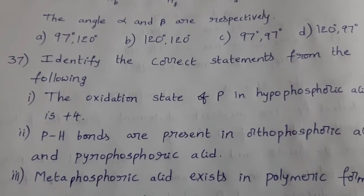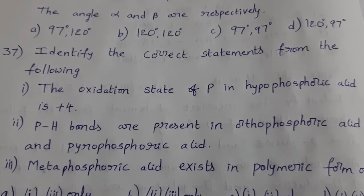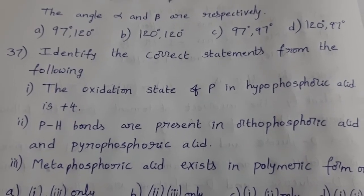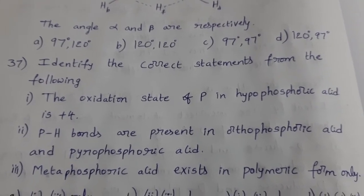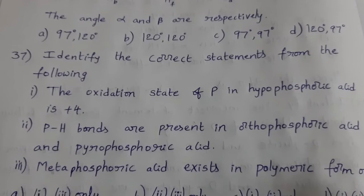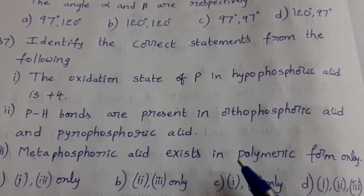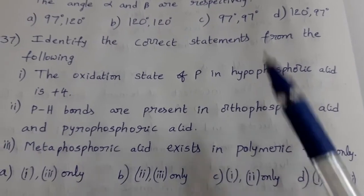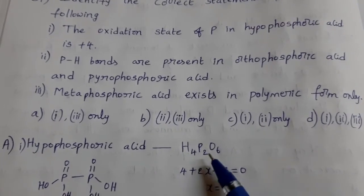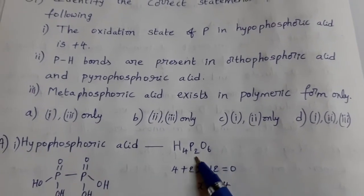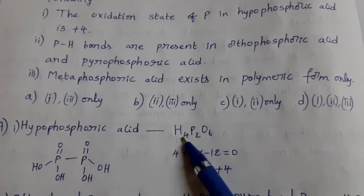Next, identify the correct statements from the following. The oxidation state of phosphorus in hypophosphoric acid is plus 4. P-H bonds are present in orthophosphoric acid and pyrophosphoric acid. Third statement, metaphosphoric acid exists in polymeric form only. See the first one, hypophosphoric acid.